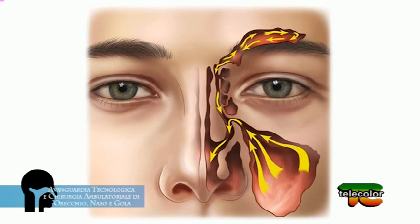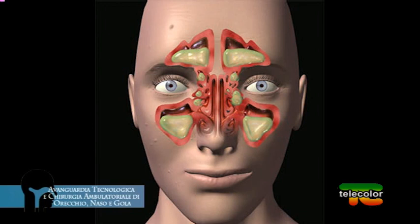Il muco nella sua produzione è un meccanismo fisiologico: ci deve essere perché è un lubrificante e un sistema di difesa naturale verso gli agenti patogeni quali batteri, virus e funghi. Ma se il muco viene prodotto in eccesso o se il suo smaltimento è insufficiente, inizio ad avere il versamento o il deposito. L'accumulo è dovuto a un'eccessiva produzione, a un cattivo drenaggio, o a una combinazione di questi due aspetti.